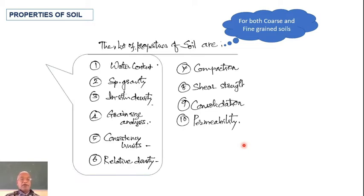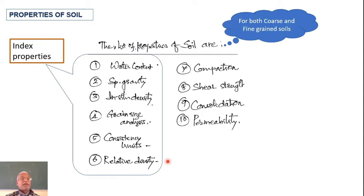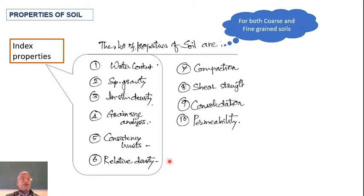The first six properties — water content, specific gravity, in-situ density, grain size analysis, consistency limit, and relative density — are called index properties. Just as the index of a book tells you what is in the whole book, index properties tell you everything about a soil: how it looks, what its strength is, and where it can be used. These things are identified quickly, to some extent, by these properties — that is why they are called index properties.